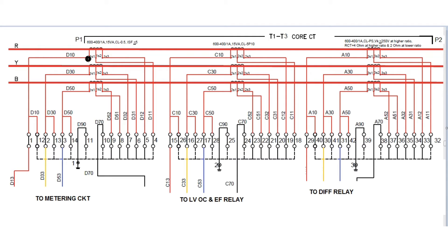There exist two ratios: 600/1 and 400/1. There are three terminals on the CT secondary side — S1, S2, and S3. For the metering core there exist 1S1, 1S2, and 1S3 for red, yellow, and blue phase respectively. Similarly, for the protection core — the overcurrent core — there exist 3S1, 3S2, and 3S3 respectively.